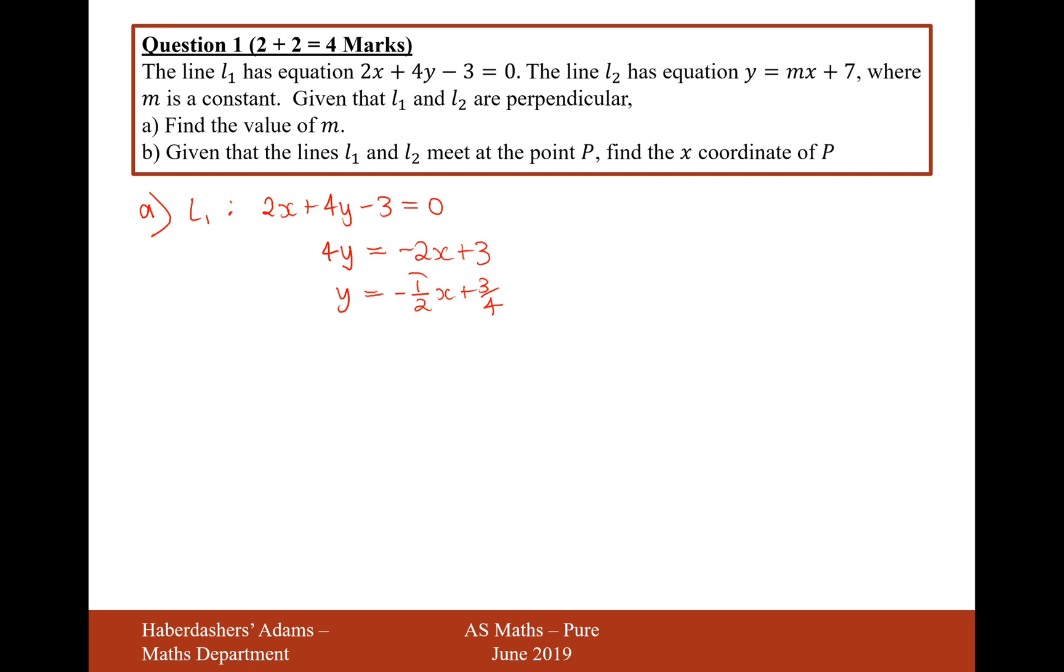So now we need to think, what's going to be the perpendicular gradient to minus 1 half? Well, the rule is that you flip the fraction and change the sign. So if we flip the fraction, it's now 2 over 1, which is just 2, and change the sign from negative to positive. So m is equal to 2. That's the answer for part a.